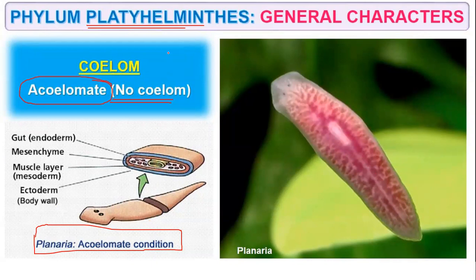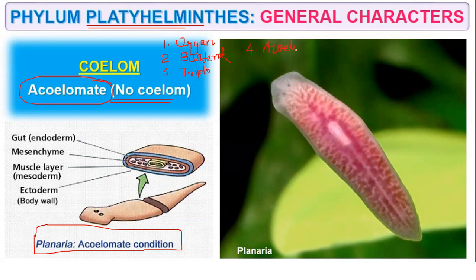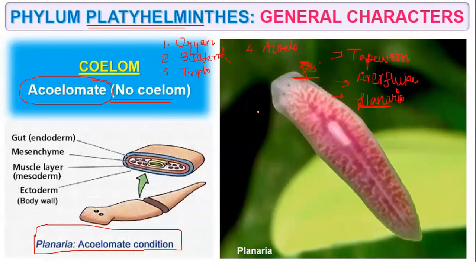To recap: Platyhelminthus have organ level of organization, show bilateral symmetry, are triploblastic in nature, and are acoelomate organisms. Their examples are tapeworm, liver fluke, and planaria, which has true regeneration capacity.